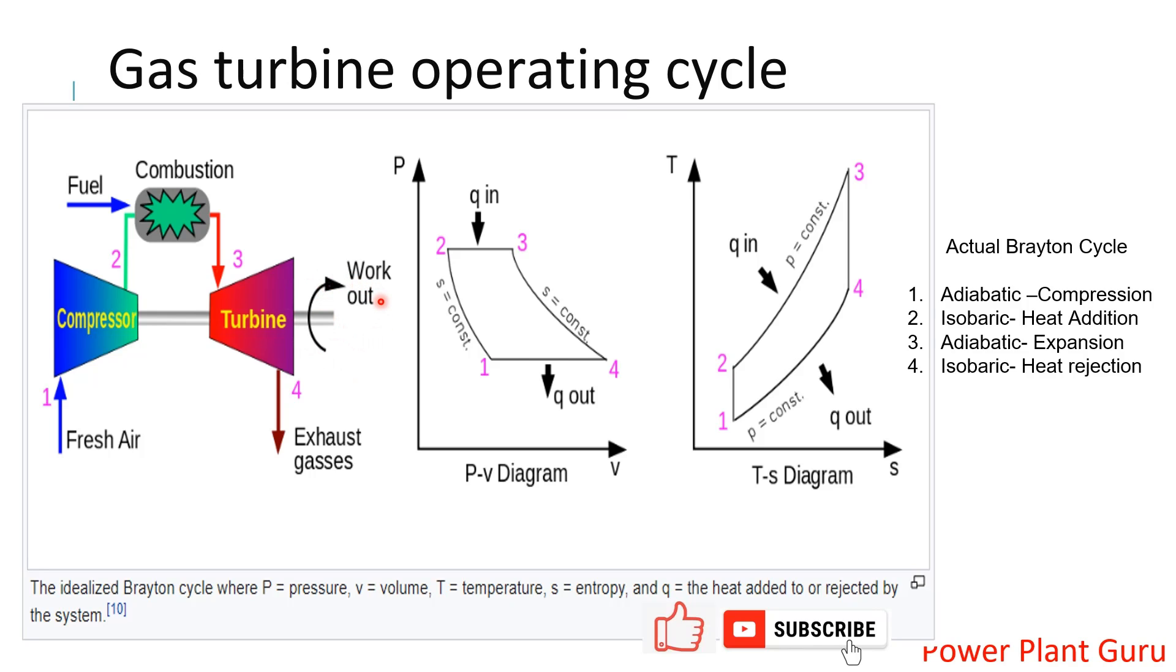What we saw: 1 to 2 adiabatic compression, 2 to 3 constant pressure heat addition, 3 to 4 adiabatic expansion, and 4 to 1 is constant pressure heat rejection. This is the ideal cycle.